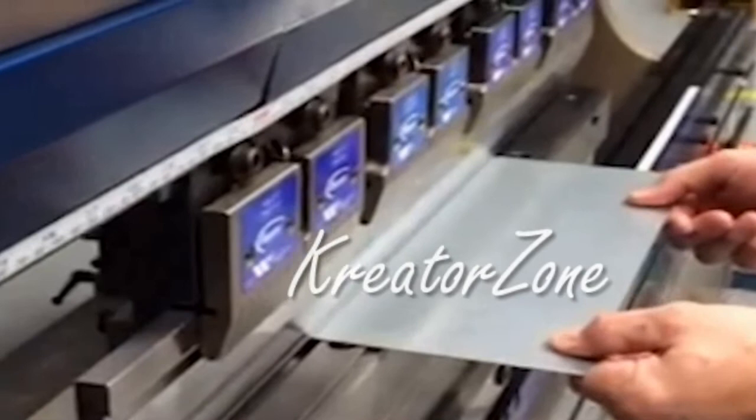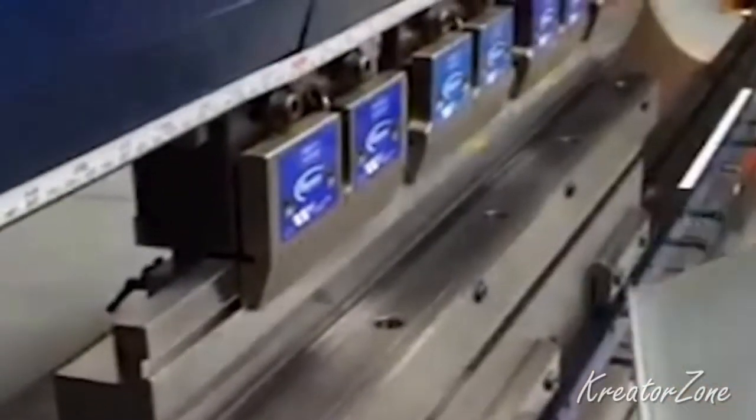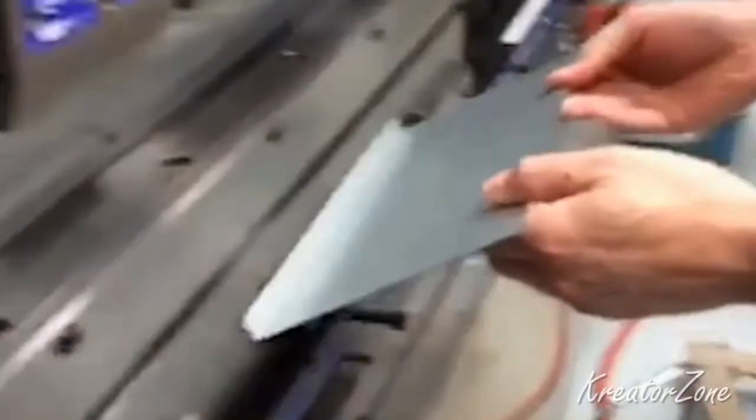Curling sheet metal is the process of adding a hollow, circular roll to the edge of the sheet. The curled edge provides strength to the edge and makes it safe for handling.